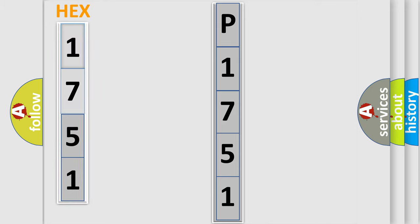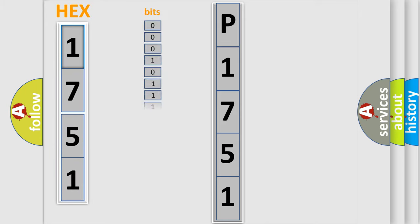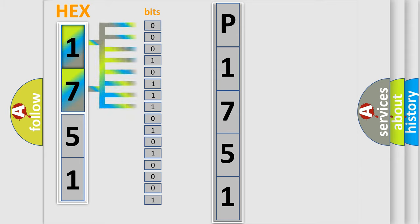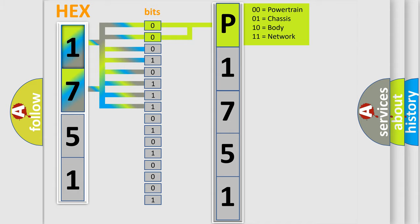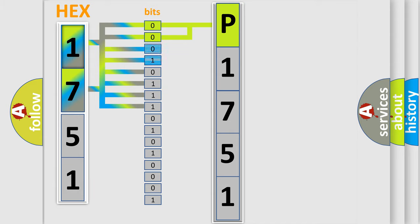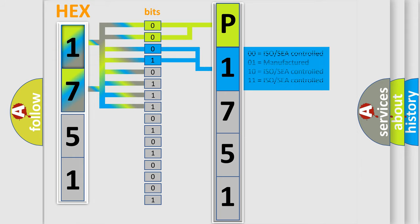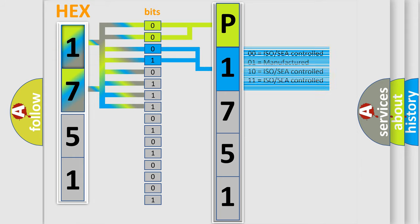The error code is split into two bytes consisting of 16 bits. One bit is the basic unit that each computer works with. The bit has two logical states: zero, low level, and one, high level. By combining the first two bits, the basic character of the error code is expressed. The next two bits determine the second character. The last bits of the first byte define the third character of the code.